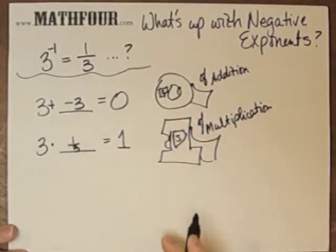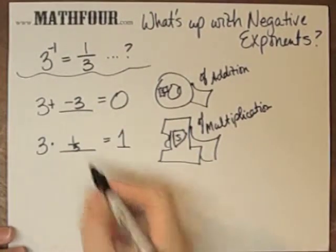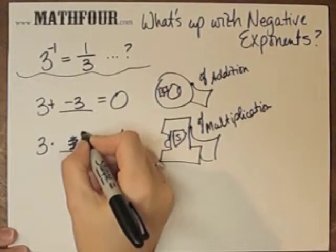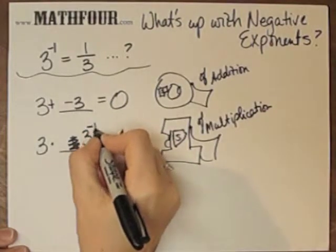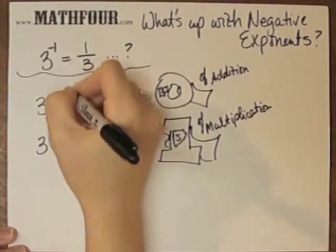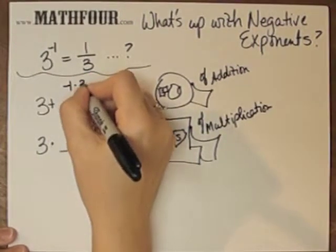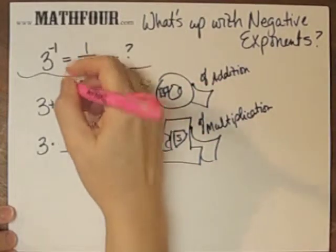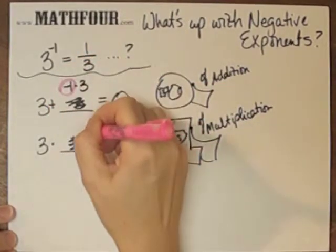These two don't have any similarities right now. If we instead look at it like this, 3 times 3 to the negative 1 power, and then we look at this as negative 1 times 3, we'll notice that we have a negative 1 in each situation.